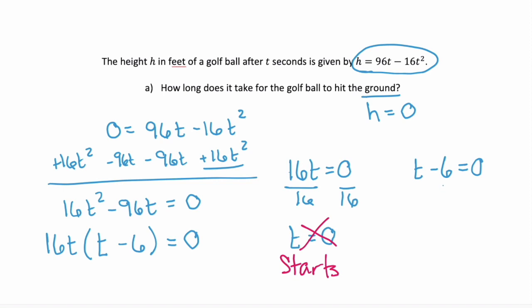The second one, t minus 6. We add 6 to both sides, and we get time equals 6. This makes more sense. It takes 6 seconds from the time the golf ball was hit for it to hit the ground. And we know that it's seconds because the word problem tells us time is in seconds. So our final answer for part a is t equals 6 seconds.